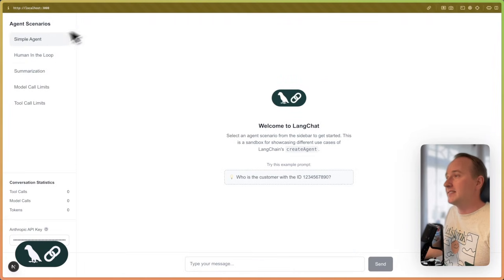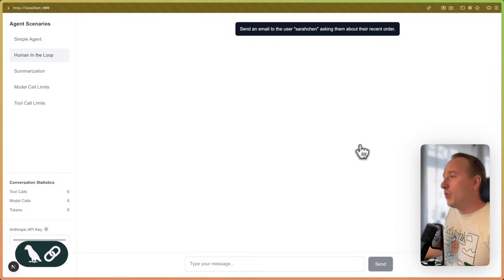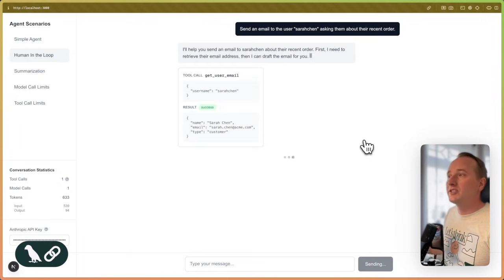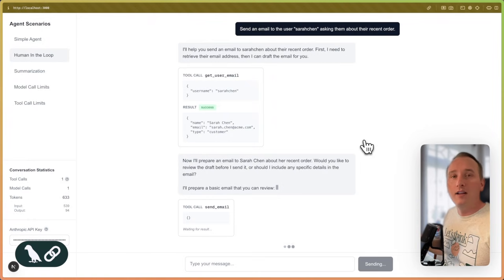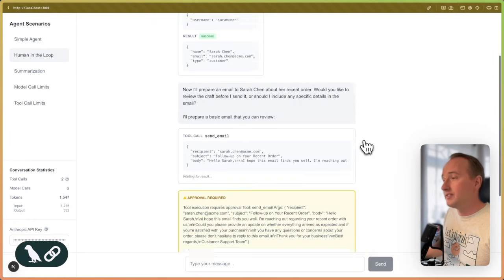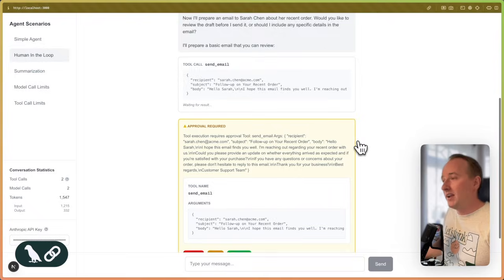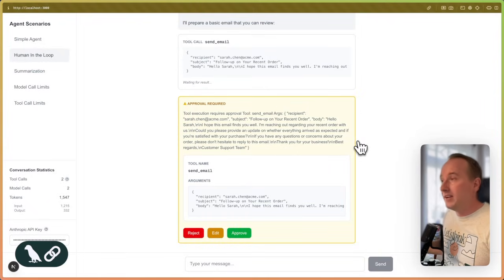So let's test this out. With the new workflow, you will see that the agent is still calling the get user email without asking for our permissions. But now for the sent email, we see that an interrupt appeared and the agent now asks us for approval.